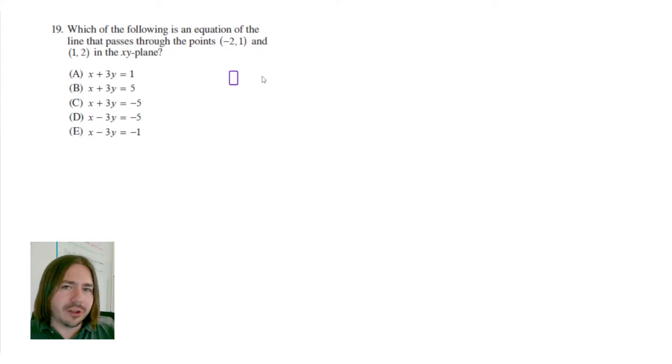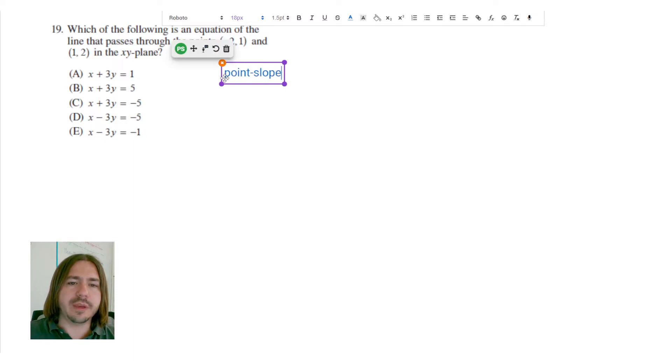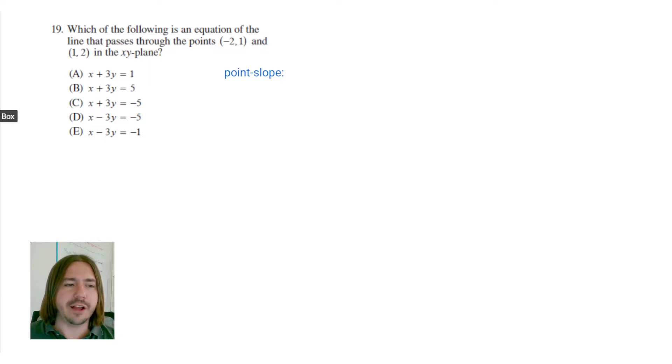So first, let's do it the quote-unquote correct way. I'm going to write this equation in what's known as point-slope form. Because I'm given a point, and I'm not given the y-intercept, unfortunately, but I am implicitly given the slope. Not explicitly, but implicitly. It doesn't actually tell me specifically what the slope is, but it does give me two points for which I can find the slope.